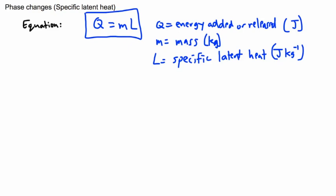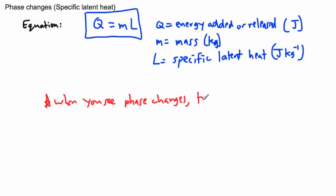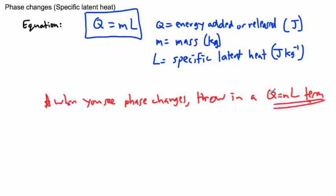Here's the key: when you see questions involving phase changes and mathematical problems, throw in a q = mL term for whichever substance is actually changing phase. Just add that term in. Let me show you an example — that should help clarify things.